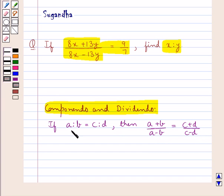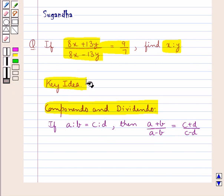So when we have a upon b is equal to c upon d, then on applying componendo and dividendo we get a plus b upon a minus b is equal to c plus d upon c minus d. This is the key idea that we use for this question.